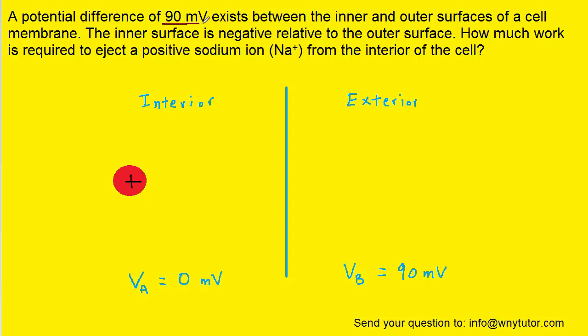Because the question noted there is a potential difference of 90 millivolts, we can call the interior of the cell zero millivolts and the exterior 90 millivolts. That way the potential difference is indeed equal to 90 millivolts.